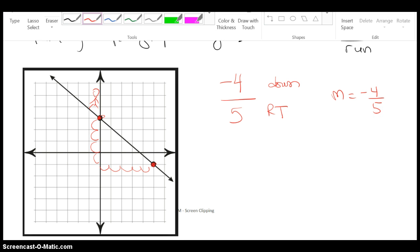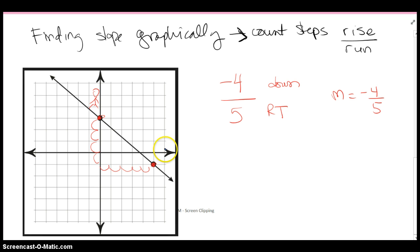If I want to look at it a different way, I can start over here and count my steps going up to the other location. I have four steps up, and then to get to the other ordered pair, I've gone to the left, so that's four over negative five, which means slope is going to be four over negative five.